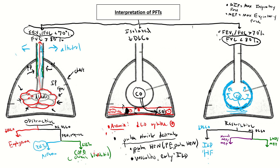If you have a restrictive deficit with a normal DLCO, that tells you there are no parenchymal abnormalities — this is going to be extrapulmonary. Your next step is measuring MIP and MEP, which assess inspiratory and expiratory force. If MIP and MEP are normal, the patient doesn't have neuromuscular weakness; their restriction is caused by extrapulmonary constriction.